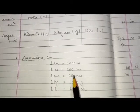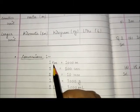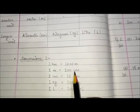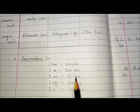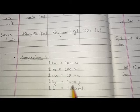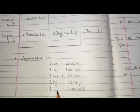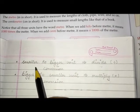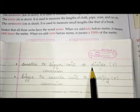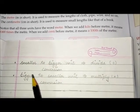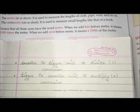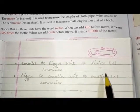We have to learn the relations between these units. In one kilometer there are thousand meters, in one meter there are hundred centimeters, in one centimeter there are ten millimeters, in one kilogram there are thousand grams, and in one liter there are thousand milliliters. When we convert smaller to bigger unit we divide, and when we convert bigger to smaller unit we multiply — by ten, hundred, or thousand.